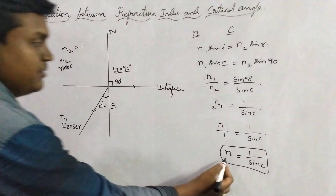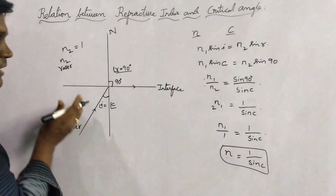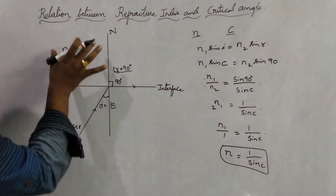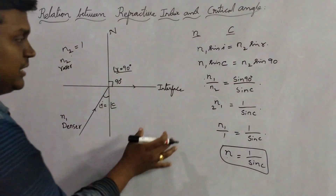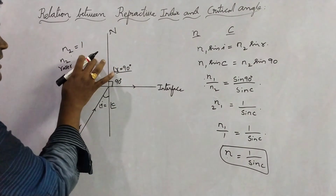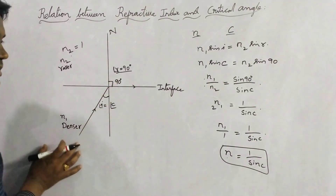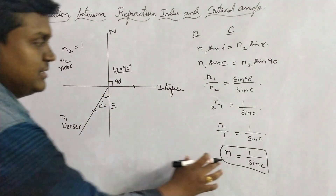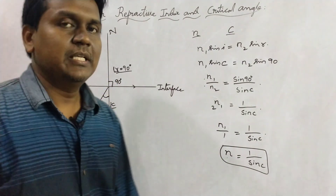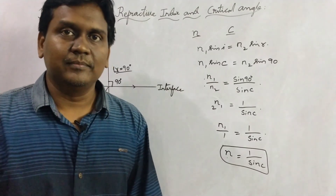So directly we have taken N here. If there are two mediums we will consider N1 and N2. But since we already know the second medium is air, we can consider that as 1, so we simply write N. The relation is N equal to 1 by sin C.